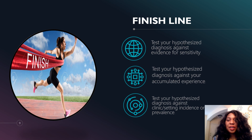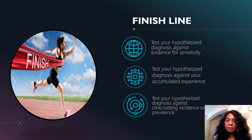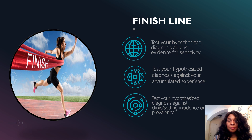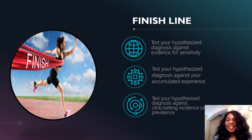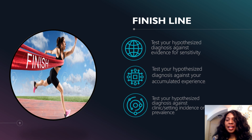You also have to test your hypothesized diagnosis against your accumulated experience. When you're in a clinical setting, you map out patient patterns — what kind of patient presents with asthma, what is prevalent in your community and your clinical setting. You utilize what is called hermeneutics in nursing or philosophy, also known as experiential knowledge. Then you test your primary diagnosis against your clinical setting's incidence and prevalence — what you've seen in practice and what you normally diagnose people with.